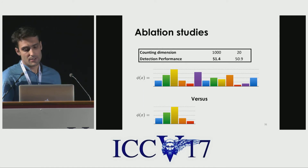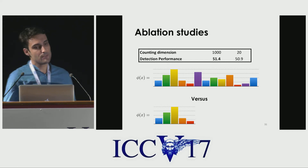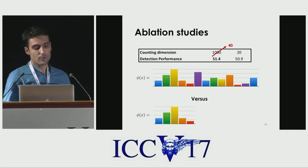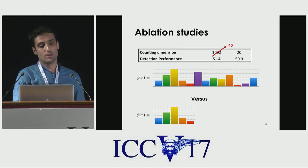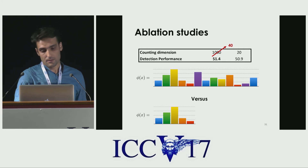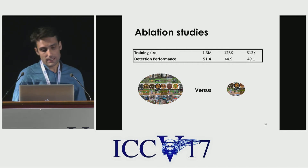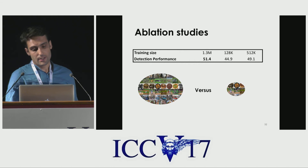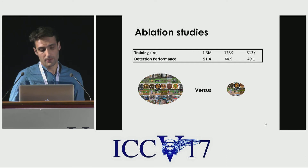Another observation was that the learned counting vector tends to have only a few non-zero entries. For example, training on ImageNet using a 1000-dimensional FC8 layer, we found only 40 non-zero elements. To see the impact of this, we trained the same network using a 20-dimensional FC8 layer and found the network is still able to learn high-quality representations. Also, we found that having more data during training gives higher performance in transfer learning.